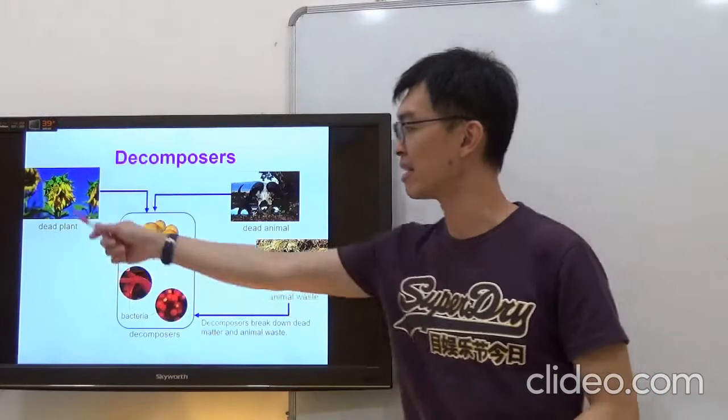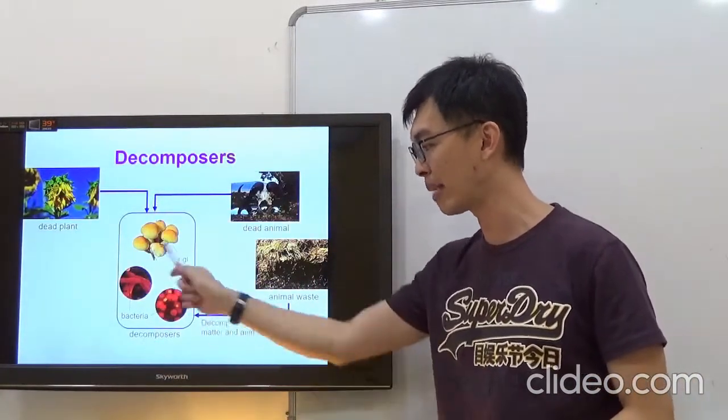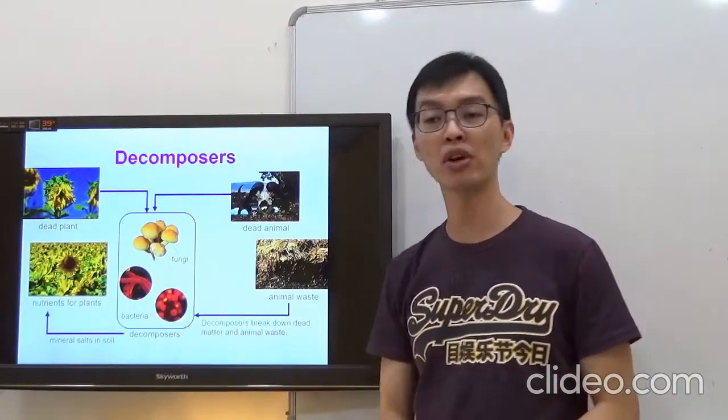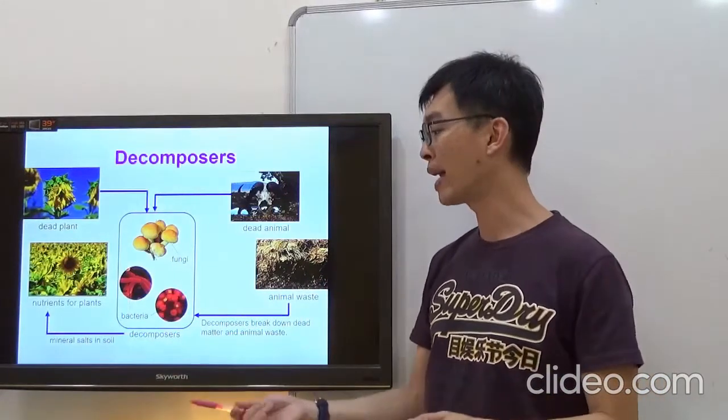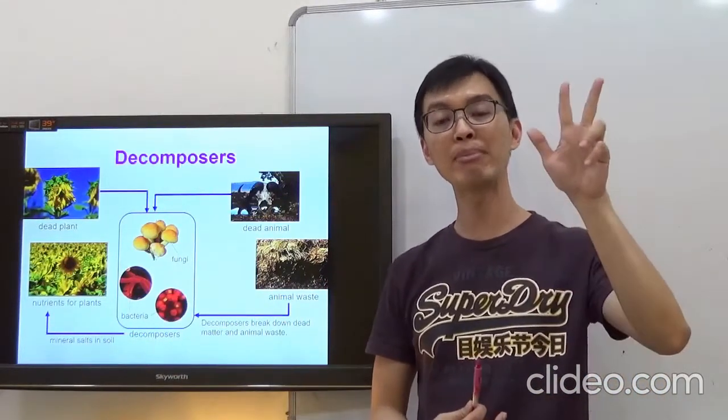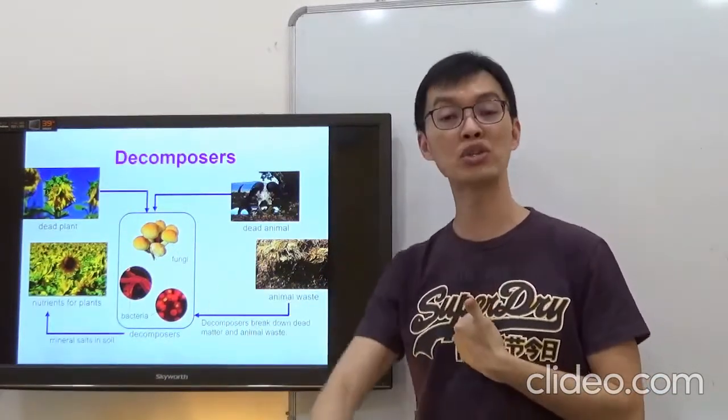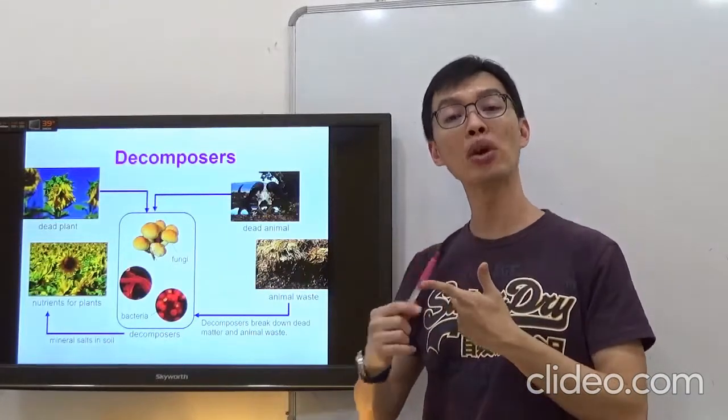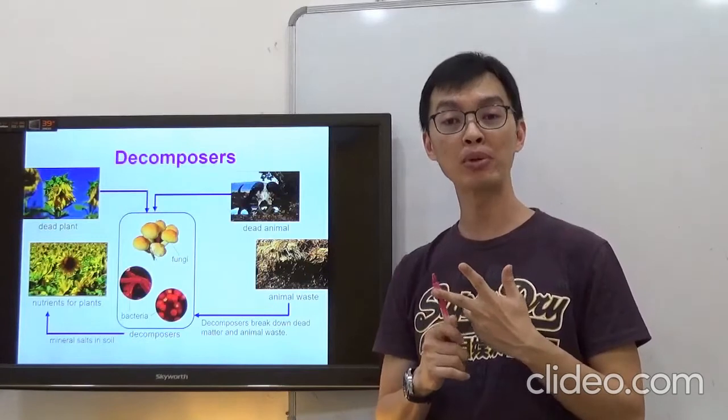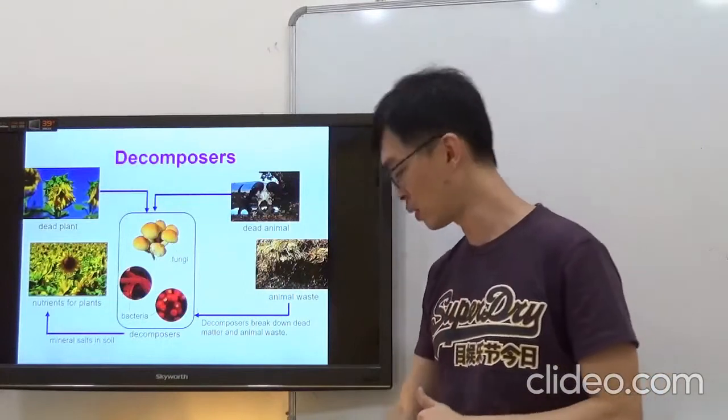So we're just having an example. A dead plant, a dead animal or animal waste will be broken down by fungi and bacteria. And eventually become nutrients for the plants. Now remember, when fungi and bacteria break them down, they actually break them down into three things. Number one, the nutrients. Nutrients into the soil. They will break them down into water. Water back into the soil. They also break them down by producing carbon dioxide to the surrounding, where they will be taken in by the plant during photosynthesis.